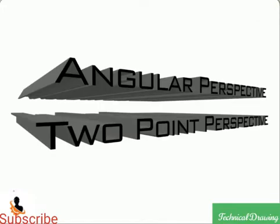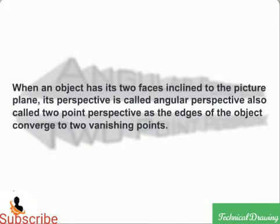Angular Perspective or Two-Point Perspective. When an object has its two faces inclined to the picture plane, its perspective is called Angular Perspective, also called Two-Point Perspective, as the edges of the object converge to two vanishing points.